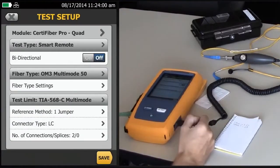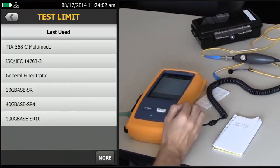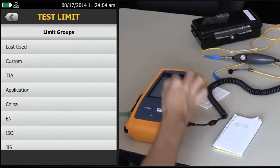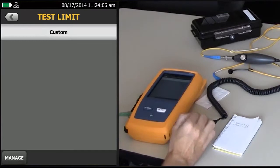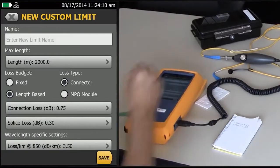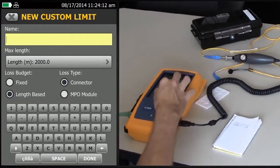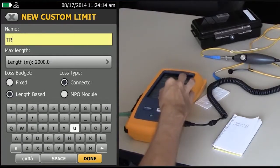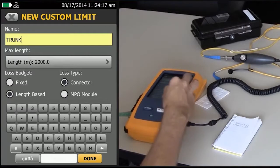And then, since we're changing the test limit, we'll tap Test Limit, More, and Custom. Manage, and we'll go and create one. We'll give it a name first of all: Trunk 01.